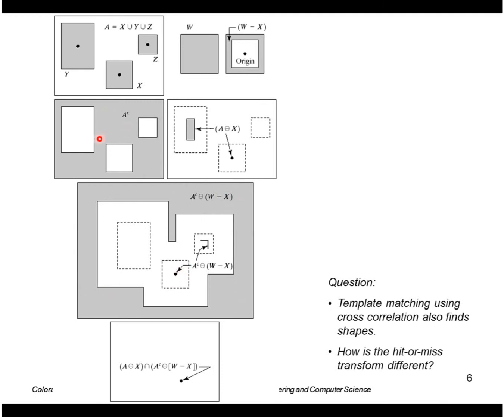The single point here because it completely surrounds the shape that we're looking for. And then actually a number of locations here around the smaller shape. So we take the intersection of these two images. And that just gives us the single point here.